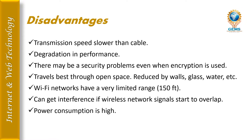Some disadvantages of Wi-Fi: transmission speed is lower than cable, which can degrade performance; there are security problems even when encryption is used; signals travel best through open space but are reduced by walls, glass, and water; Wi-Fi networks have a very limited range of about 100–150 feet; there are high chances of interference if wireless network signals start to overlap; and power consumption is also too high.